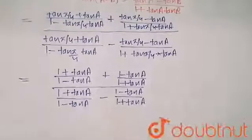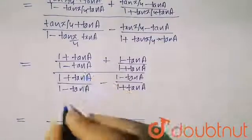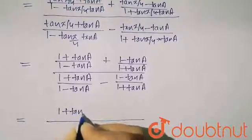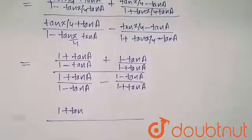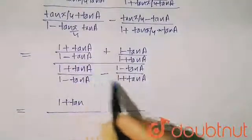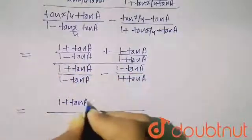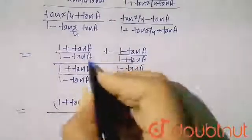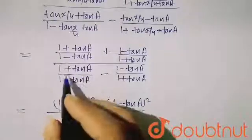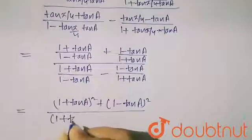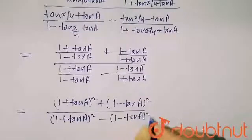So here when I take LCM in the numerator, the denominators will cancel because the denominator is the same in both terms. So in the numerator I will get (1 + tan a)² plus (1 - tan a)², and in the denominator I will get (1 + tan a)² minus (1 - tan a)².